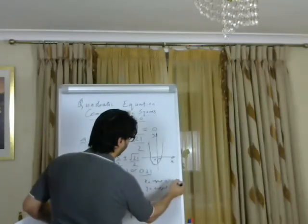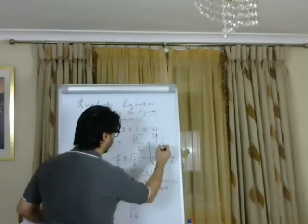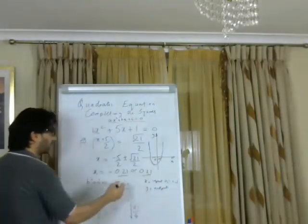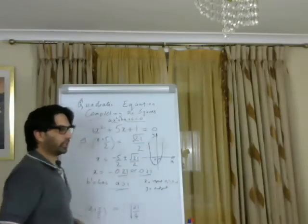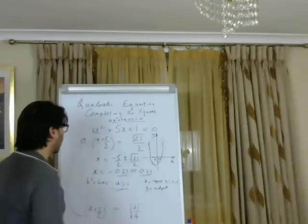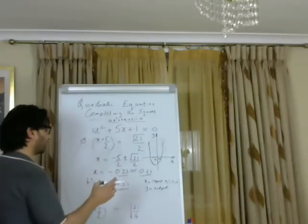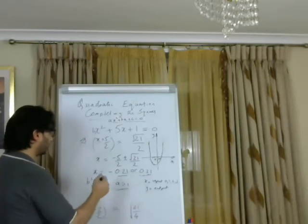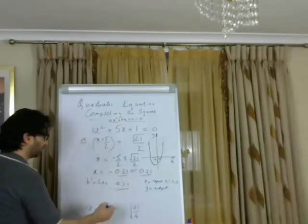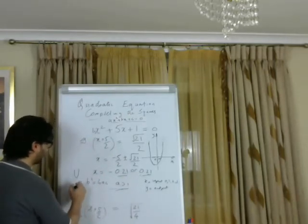You can substitute values like 1, 2, and 3 and get a parabola shape. Even without drawing, you can determine whether the parabola is a U shape or an N shape.